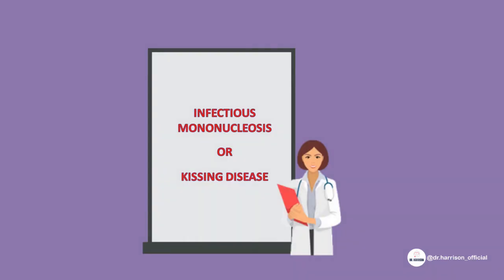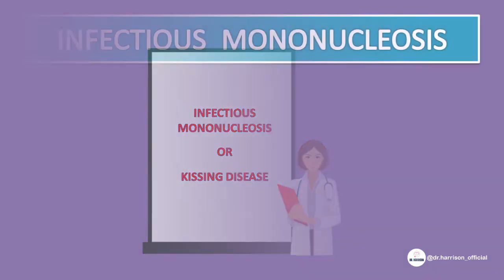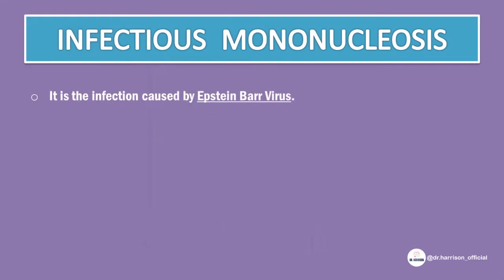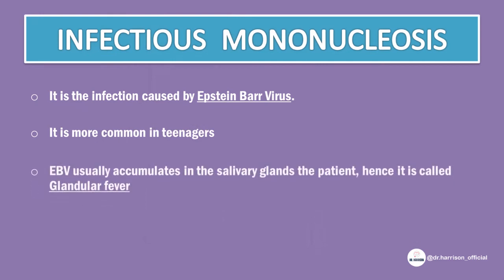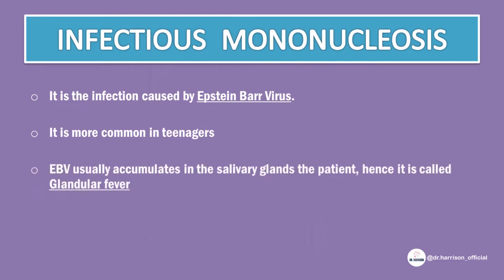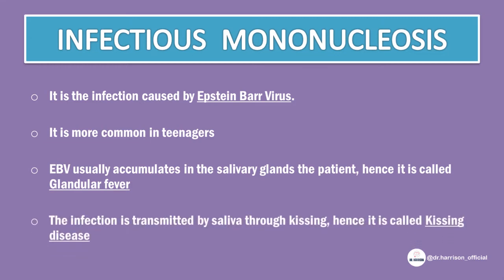What is infectious mononucleosis? It is an infection caused by Epstein-Barr virus, and it is more common in teenagers. Epstein-Barr virus usually accumulates in the salivary glands of the patient, hence it is called glandular fever. The infection is transmitted largely by saliva through kissing, which is common among adolescents, and that is why it is called kissing disease.